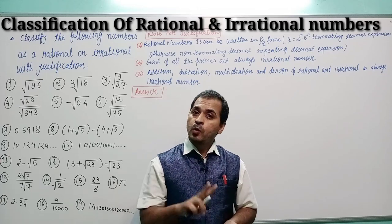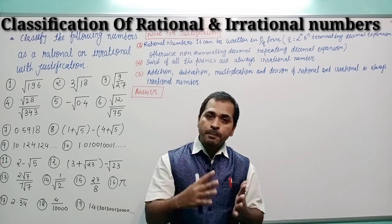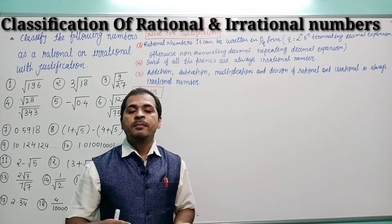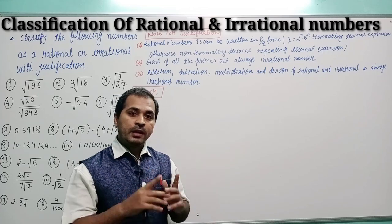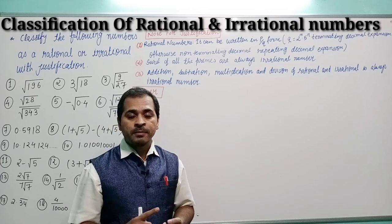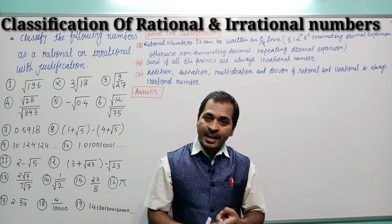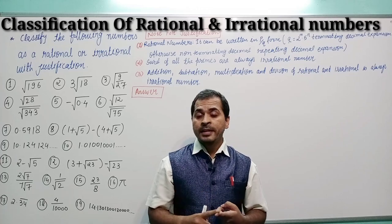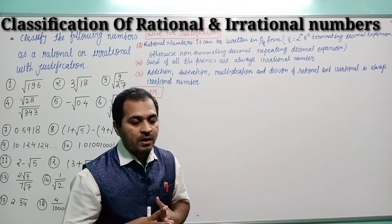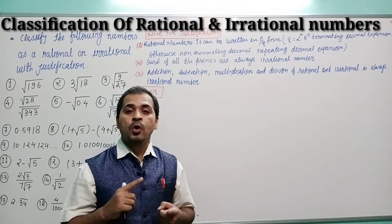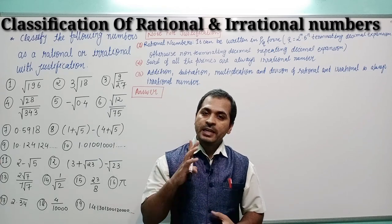In rational numbers there are two types of decimal expansion. If the term p/q is written in terminating decimal expansion, that number is always a rational number. If the decimal expansion is non-terminating but recurring, that number is also a rational number. If the number is non-terminating and non-recurring, that number is always irrational.